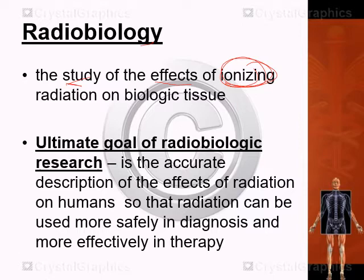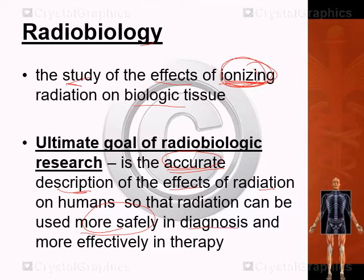Basically, when we discuss radiobiology, we are referring to ionizing radiation. The ultimate goal of radiobiologic research is to provide an accurate description of the effects of radiation on humans or living tissue, so that radiation can be used more safely during diagnosis — to avoid exposing the patient to unnecessary doses — and more effectively in therapy, to kill cancer cells.